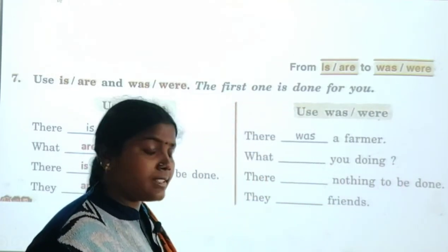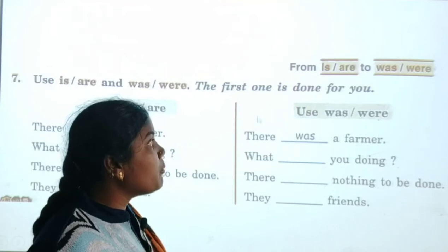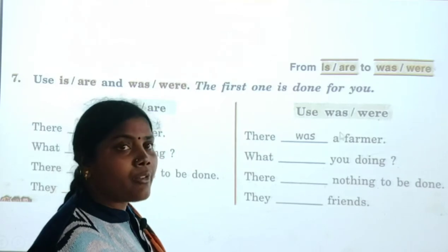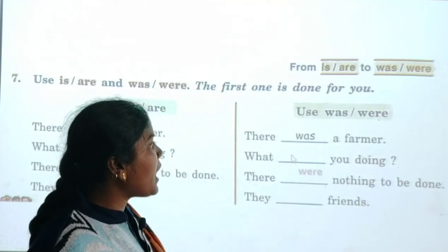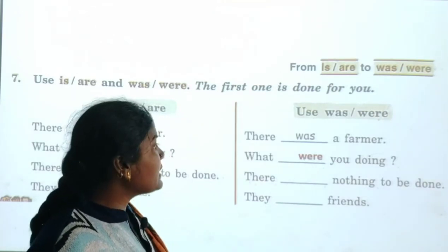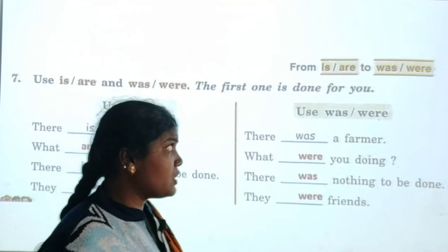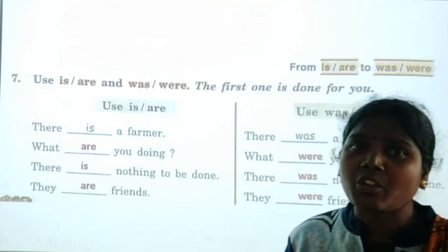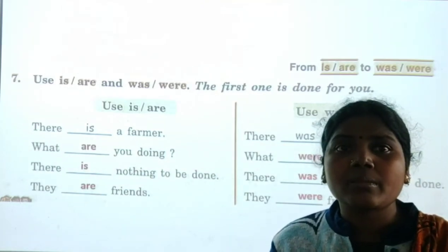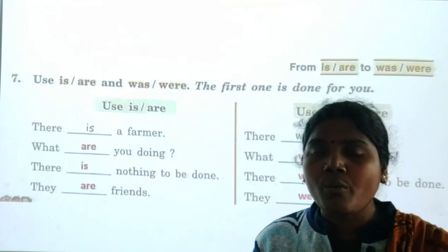Now let's go to the past tense. 'There ___ a farmer' — 'There was a farmer.' 'What ___ you doing?' — 'What were you doing?' That action is completed. 'There was nothing to be done.' 'They were friends.' For simple present tense we use 'is' and 'are'; for past tense we use 'was' and 'were.'